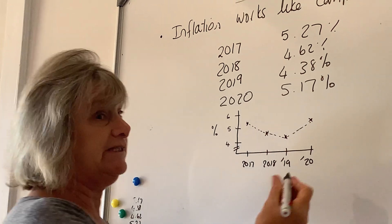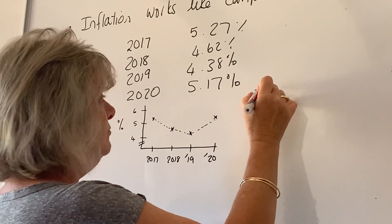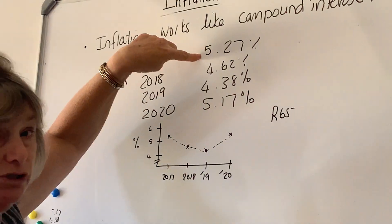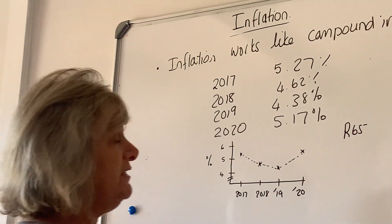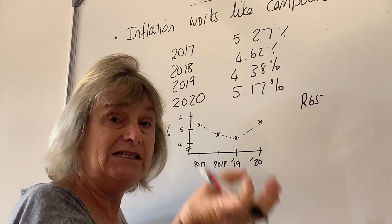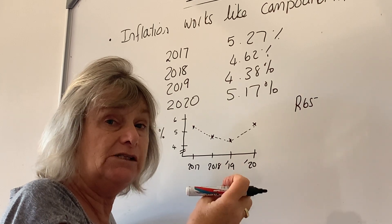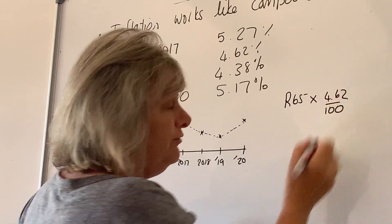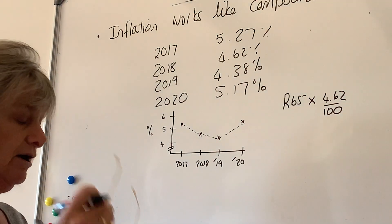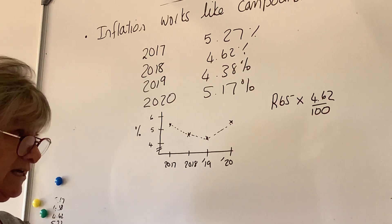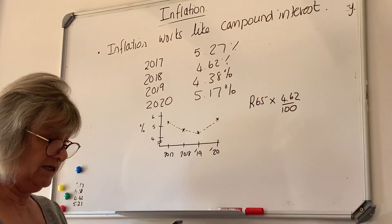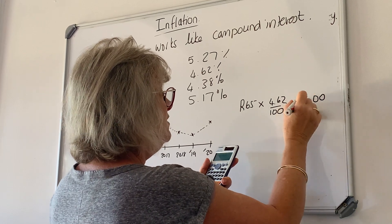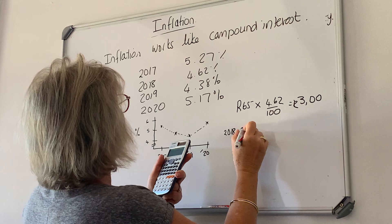Let's look at a calculation. Say in 2017 my favourite coffee was 65 rand. We start with 65 rand at the end of 2017. To find the price in 2018, we don't subtract 4.62% — we add it, because it shows a percentage increase. So we calculate 65 times 4.62 divided by 100, which equals 3 rand.